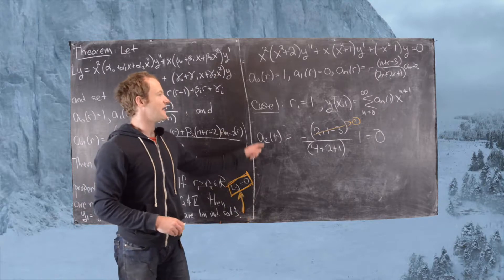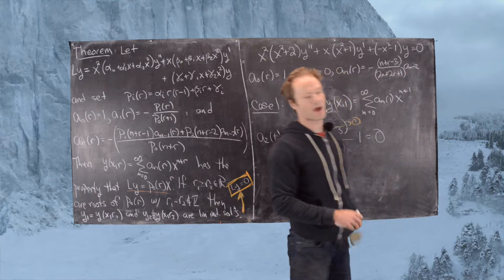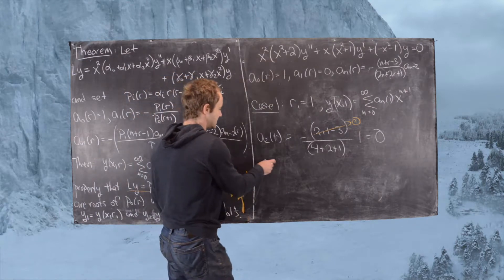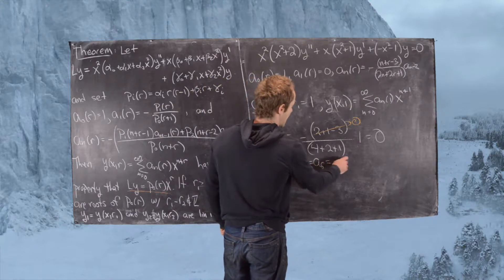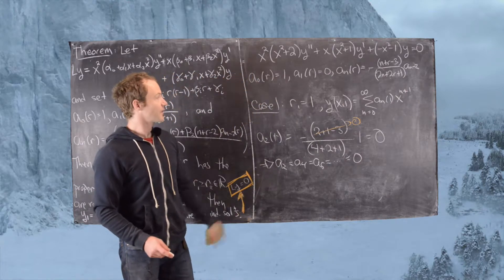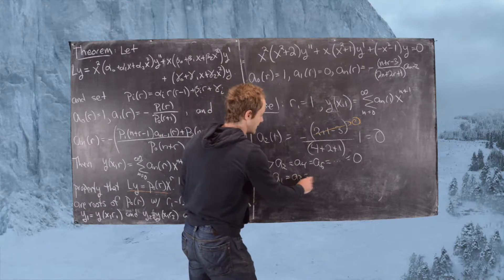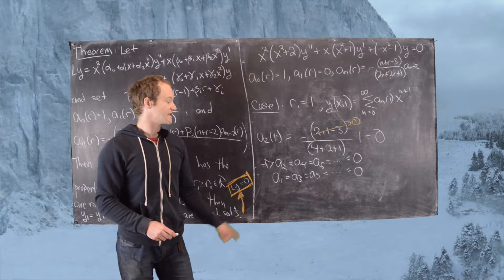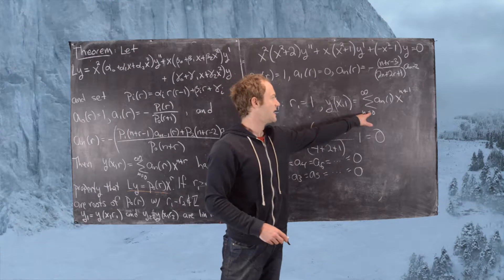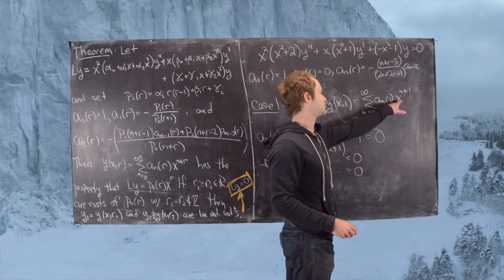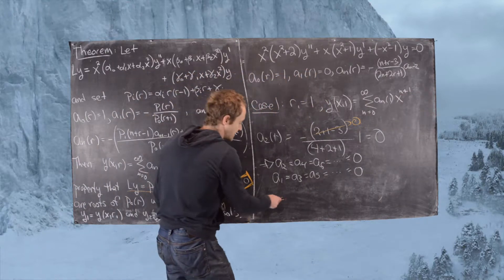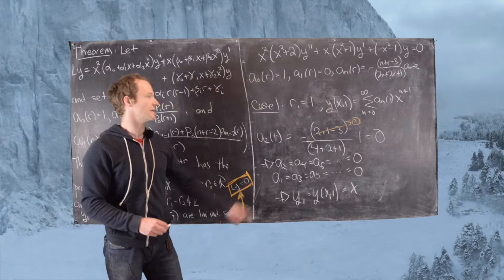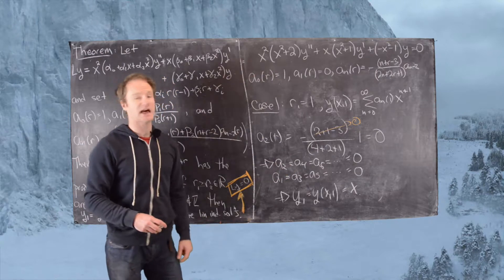Computing a2(1): we plug n=2, R=1, getting (2+1−3) / (4+2+1) times a0, which is 0/7 times 1 = 0. Since a2 = 0, we get a4 = constant times a2 = 0, then a6 = constant times a4 = 0, and so on. Similarly, all odd-indexed coefficients are zero since a1 = 0. The entire sum collapses to just the n=0 term: a0 times x^1 = x. So y1(x) = x.